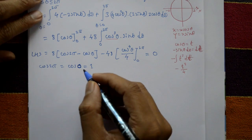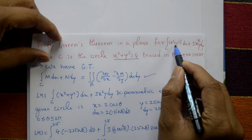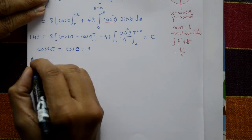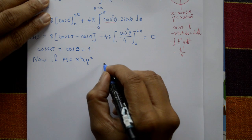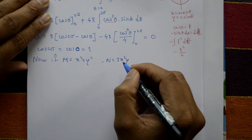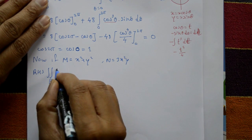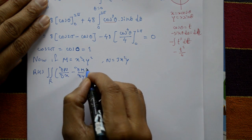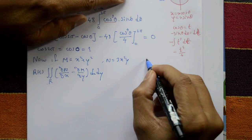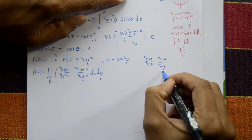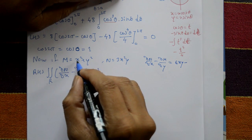Now take the right-hand side (RHS). From M dx + N dy, we identify M = x² + y² and N = 3x²y. The RHS is the double integral over region R of (∂N/∂x − ∂M/∂y) dx dy. Differentiating: ∂N/∂x = 6xy and ∂M/∂y = 2y, so ∂N/∂x − ∂M/∂y = 6xy − 2y.